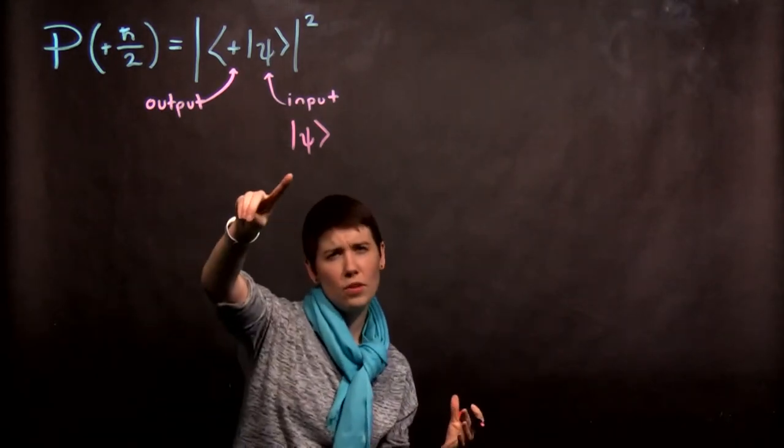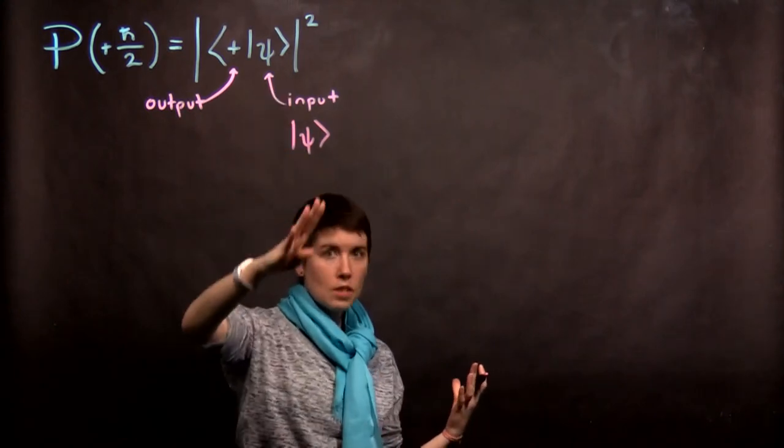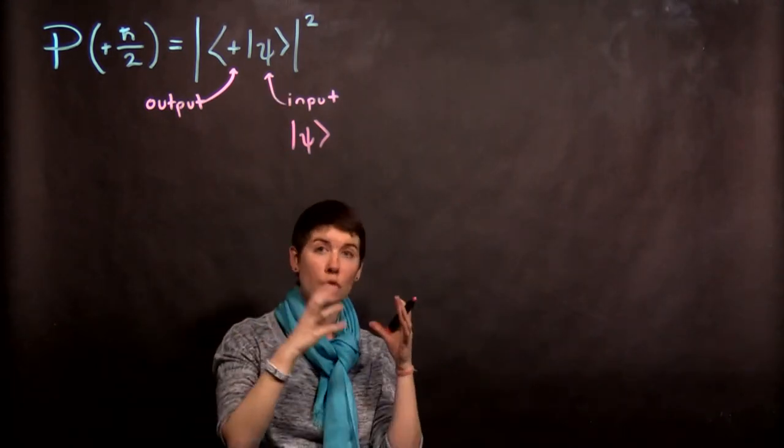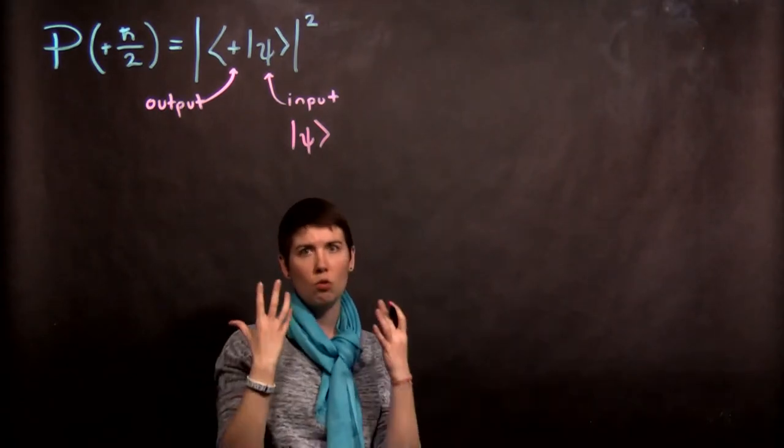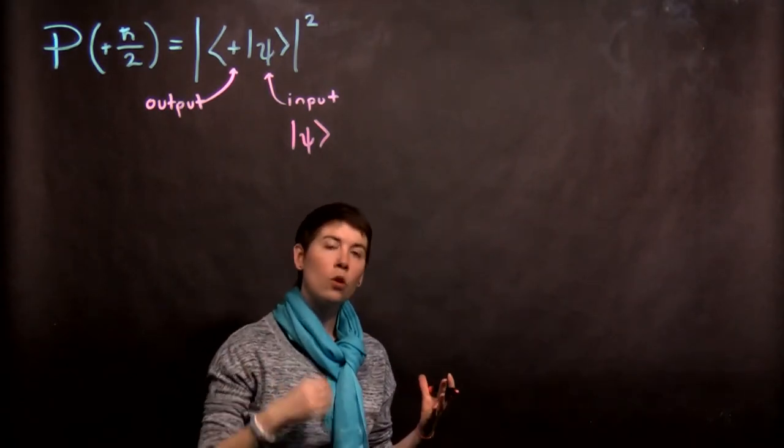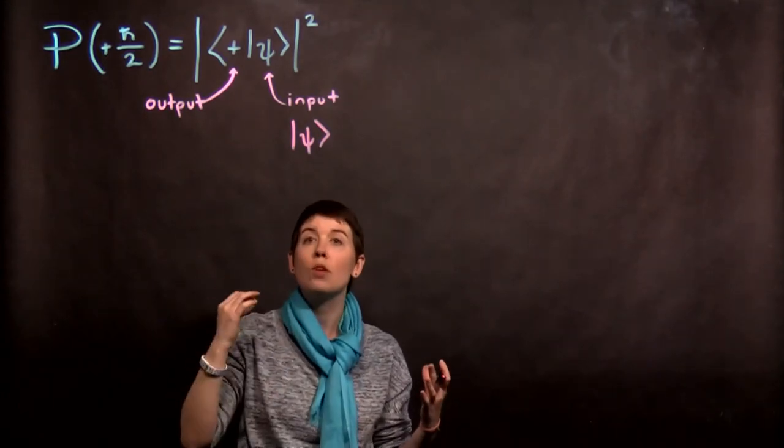So psi is kind of our favorite Greek letter when it comes to quantum mechanics, and it being in this ket is expressing it in a certain vector space, and this is our initial state, the initial quantum mechanical system we have. We then want to know, what is the probability that we measure spin up?